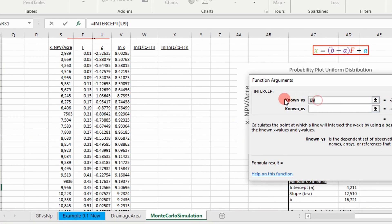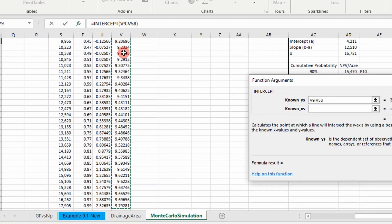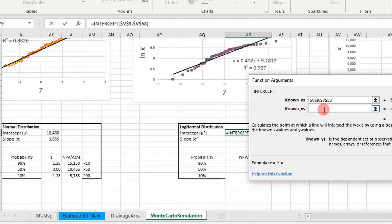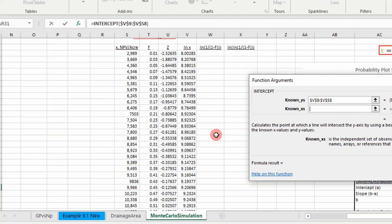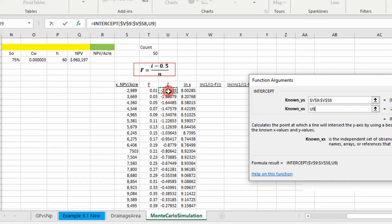Our y's are going to be the natural log of our values data. Freeze that. And then our x's are going to be our z-scores.